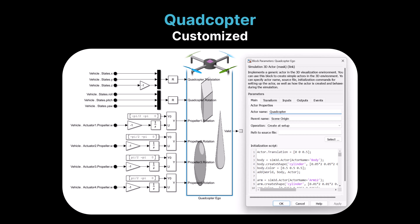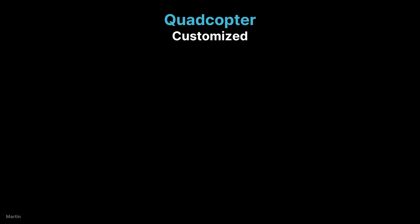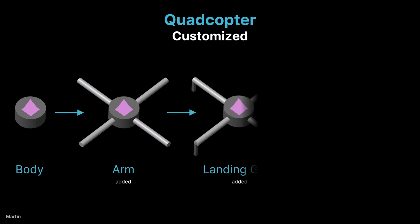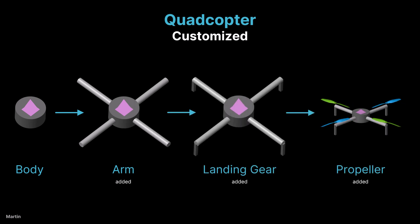We input the vehicle states and the propeller's rotation into the block to control the quadcopter's visualization. To customize the quadcopter, we use MATLAB scripts within the block, which allow us to add components step by step. We begin by adding the body of the quadcopter, followed by the arms and landing gear. Finally, we import the CAD models of the propellers to complete the setup.